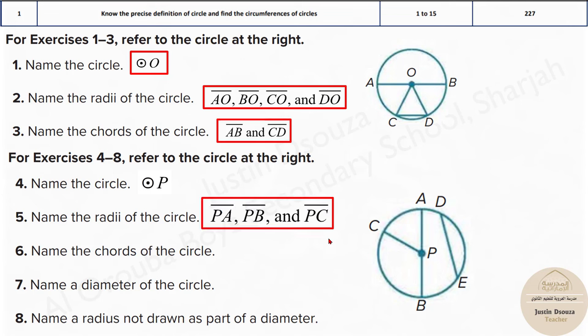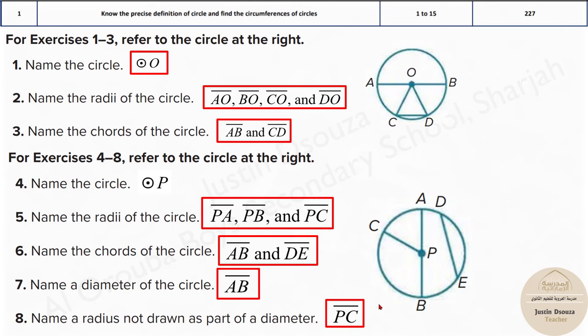The name of the circle is circle P over here. And then we have the radii PA, PB, PC. The chords would be DA and AB. The diameter would be only AB. And lastly, name the radius not drawn as a part of diameter. See, now this radius PA and PB are part of the diameter, whereas PC is not a part of the diameter.